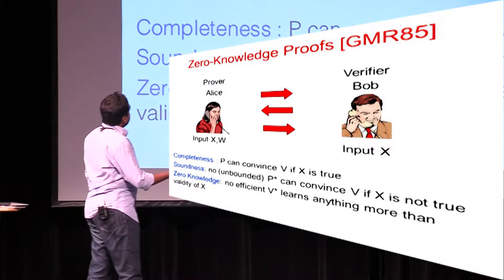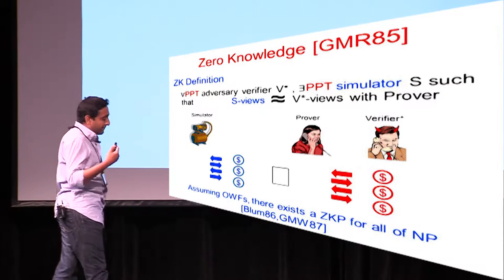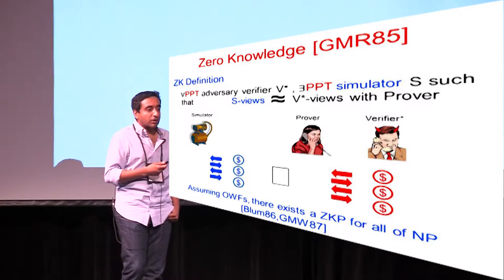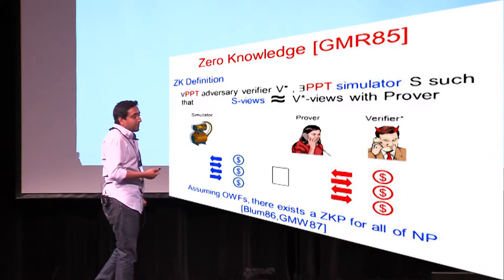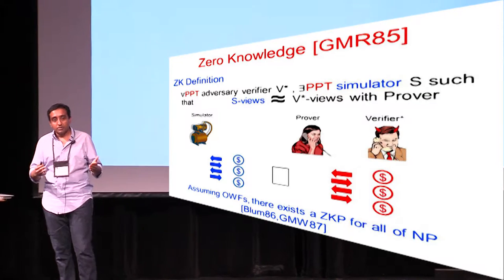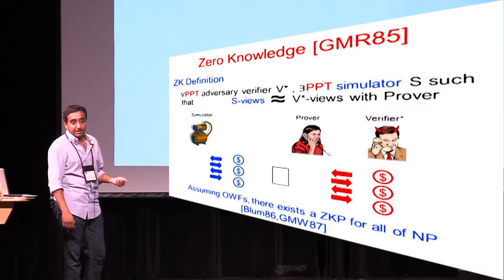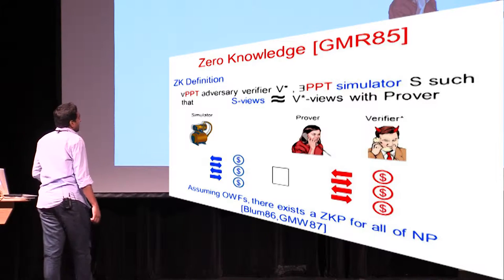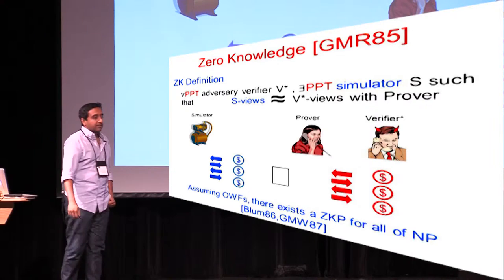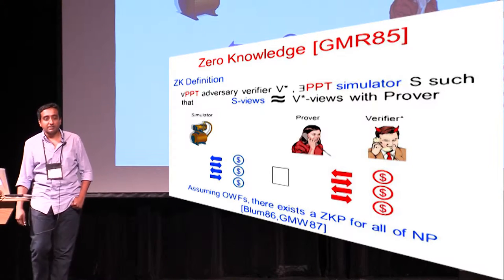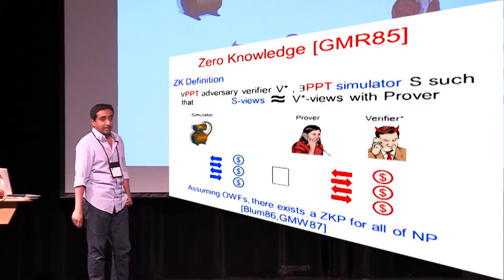The zero-knowledge property, to be a little more precise, says that for every probabilistic polynomial time adversary V*, there is a PPT simulator S that can produce views that are indistinguishable from what the verifier sees in a real interaction. What the verifier sees in the real interaction are basically the transcript of the messages and the random coins, and the simulator must be able to generate them indistinguishably.